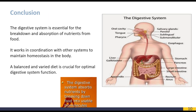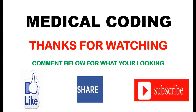In conclusion, the digestive system is essential for the breakdown and absorption of nutrients from food. It works in coordination with other systems to maintain homeostasis in the body. A balanced diet is crucial for optimal digestive system function. Thanks for watching. If you like the video, please do like, share, and subscribe to my channel. Thank you.